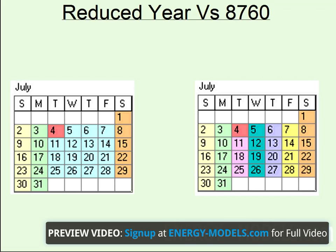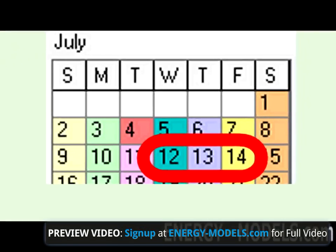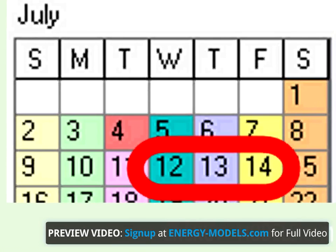In order to understand a reduced year sequence, it's best to start with an actual sequence, as we have been taught since first grade. If we take a small subsection of the year — in this case, Wednesday through Friday, July 12th through July 14th.